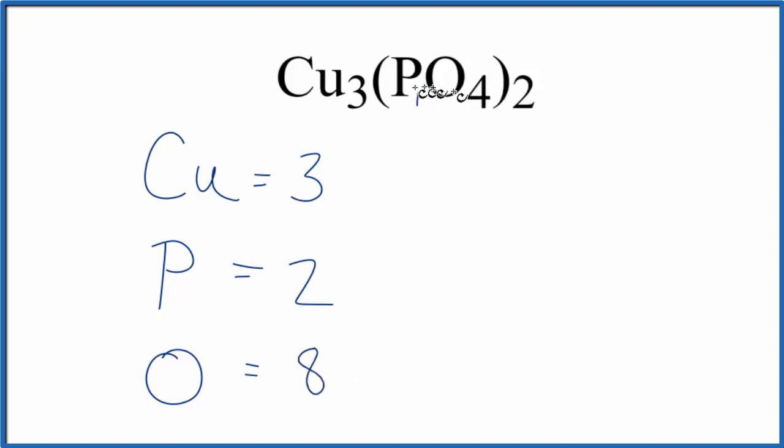If we wanted to know the total number of atoms in Cu₃(PO₄)₂, we'd have eight plus two, that would give us ten, plus three, thirteen total atoms in this copper phosphate.